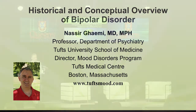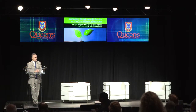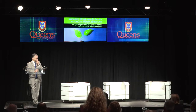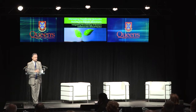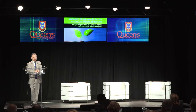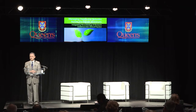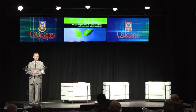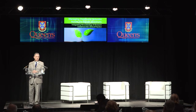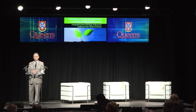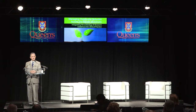Manic depressive illness before DSM-3, which occurred in 1980, meant the presence of manic or depressive episodes. So if people had only depressive episodes, they were still diagnosed with manic depressive illness. If they had manic episodes as well, they were obviously also diagnosed. The terms bipolar and unipolar were developed in the 1960s and 1970s, and then codified in DSM-3 in 1980.